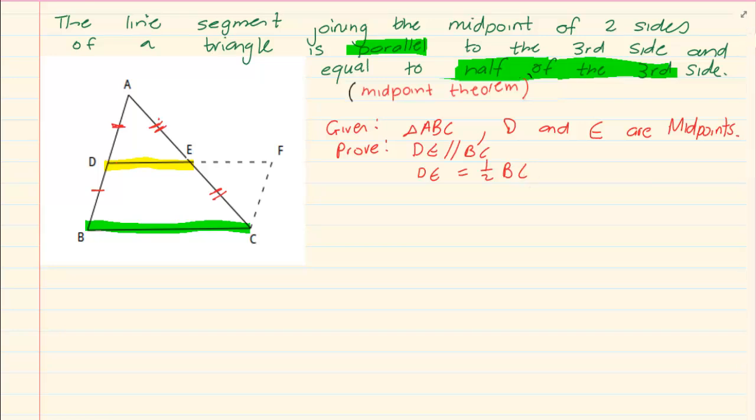Now, how do we go about doing this proof? First, you need to construct. Because when they give you this drawing, they are not going to give you EFC. So what we are going to do is, we are going to construct line FC. But look at how we are going to construct it. We are going to make it so that it is parallel to DB.